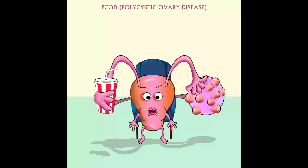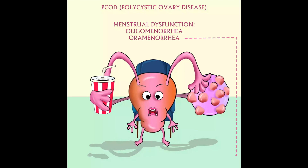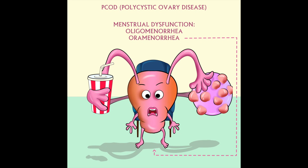PCOD is a syndrome manifested by amenorrhea, hirsutism, obesity and enlarged ovaries. Here in this animation, this dropping blood will help you to remember menstrual dysfunction, such as oligomenorrhea and amenorrhea, which is an important diagnostic criteria of PCOD.